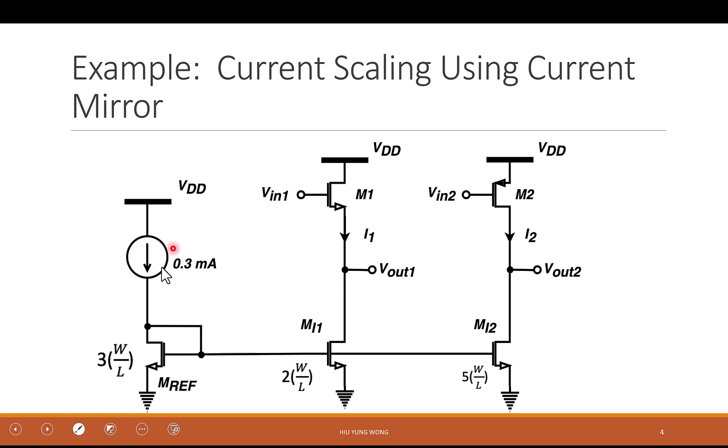We have a golden current source, 0.3 milliampere, for example, no matter what temperature, what air, what pressure, or the voltage across it, it always gives us 0.3 milliampere.